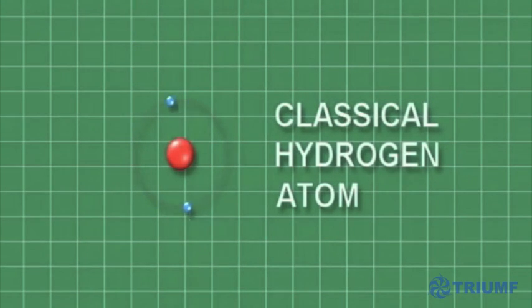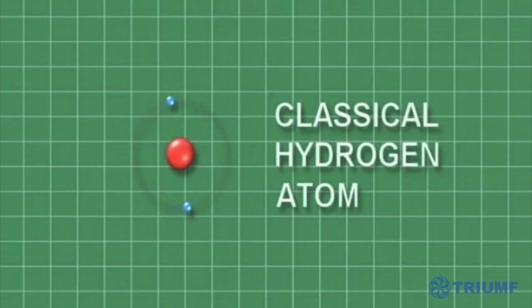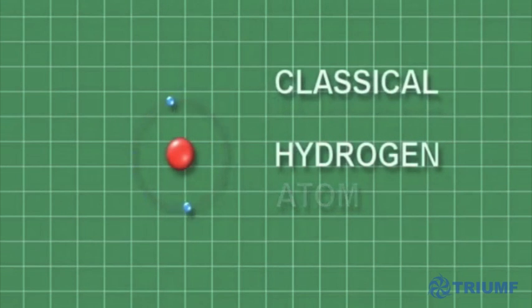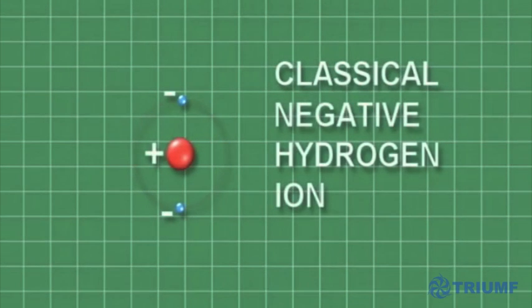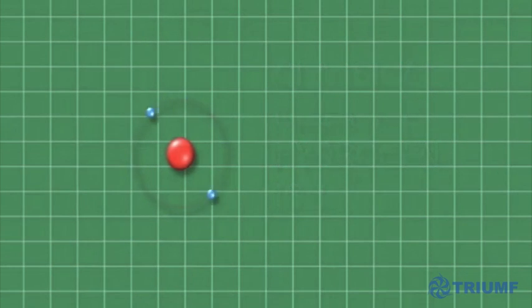If a second electron is added to the proton, it becomes what is known as a negative hydrogen ion. So, how do we make one?